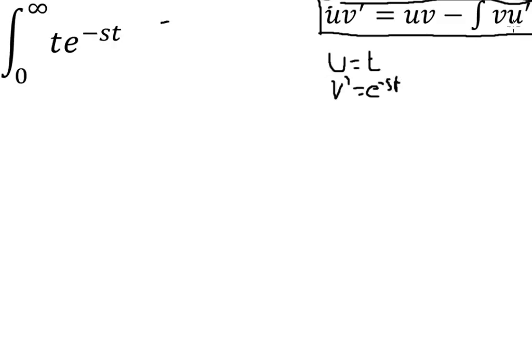Then we need to find out what u prime is and what v is. So u prime is the differential of t which is 1, and v is the integral of the Laplace. So that is e to the minus st over minus s.